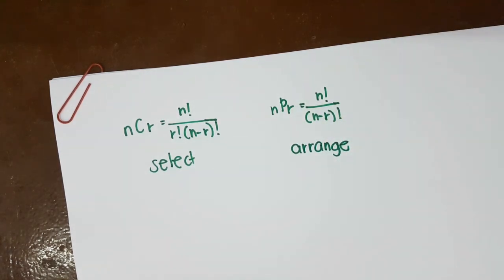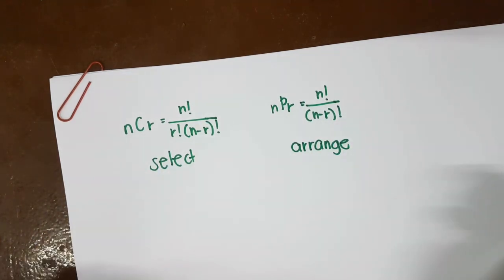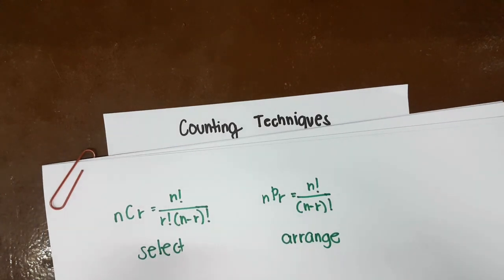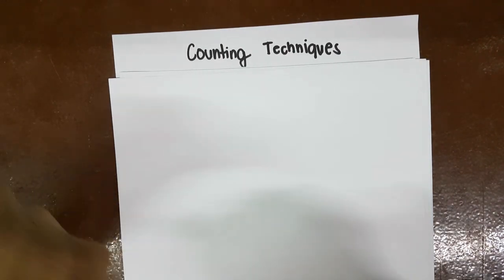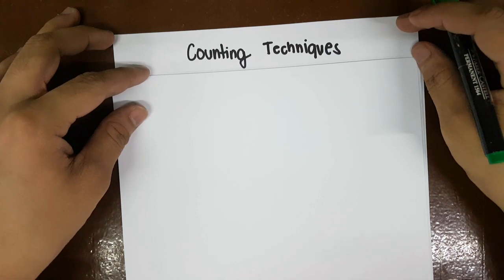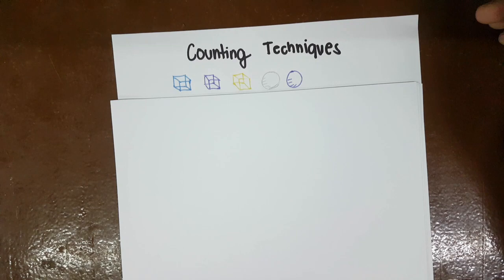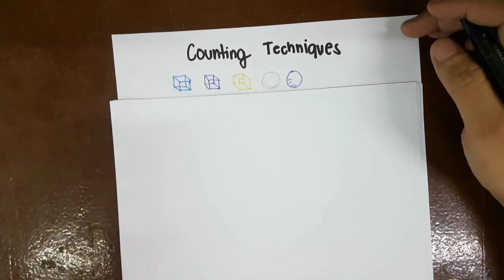This is not the best way to understand permutations and combinations. So let's proceed with the best way to understand these two topics, which is counting techniques. This will be easy if you know how to count, but it is not as easy as you think. Let's say we have three cubes and two marbles, which are distinct from each other — no two items are the same.